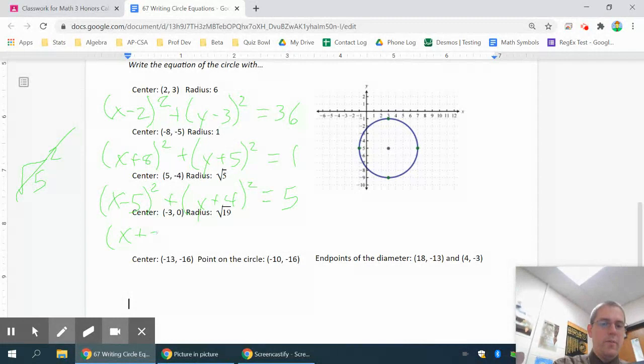On the next one, I have x plus 3 squared. You could do y minus 0 or y plus 0, but there's no need to do that. You can just do y squared, so plus or minus 0, no need to even write that down. And then square root of 19 squared is 19.